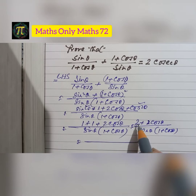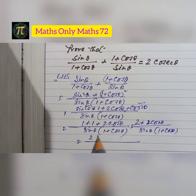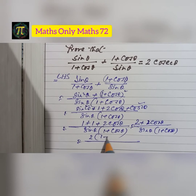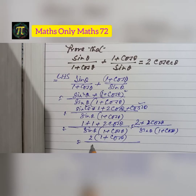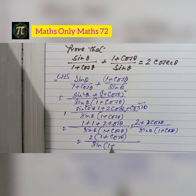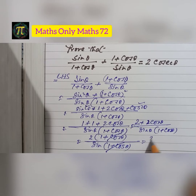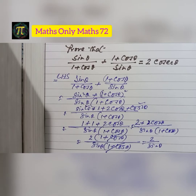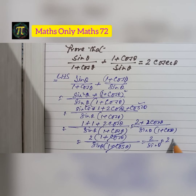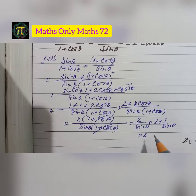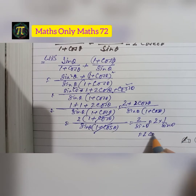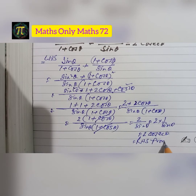The HCF of 2 + 2 cos θ is 2, so factoring out 2 gives 2 × (1 + cos θ). This becomes 2 × (1 + cos θ) / (sin θ × (1 + cos θ)). The (1 + cos θ) terms cancel, leaving 2 / sin θ, which equals 2 × cosec θ, equal to RHS.